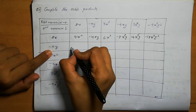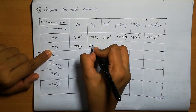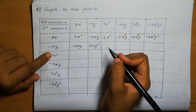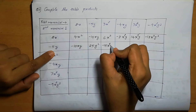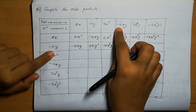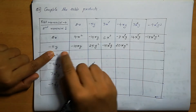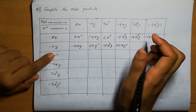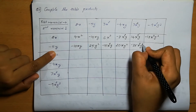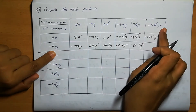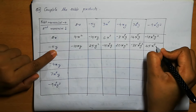Next: minus 5y into 2x is minus 10xy. Minus 5y into minus 5y: minus times minus is plus, 5 into 5 is 25, y into y is y square, giving 25y square. Minus 5y into 3x square is minus 15x square y. Minus 5y into minus 4xy: minus times minus is plus, 4 into 5 is 20, xy into y is xy square, giving 20xy square. Minus 5y into 7x square y is minus 35x square y square. Minus 5y into minus 9x square y square gives plus 45x square y cube.